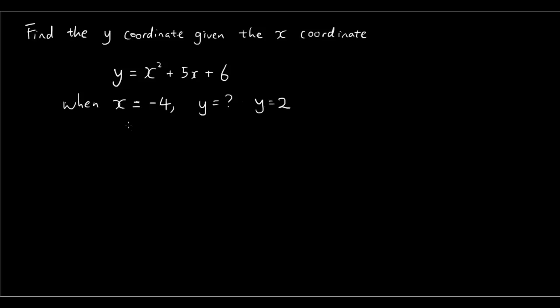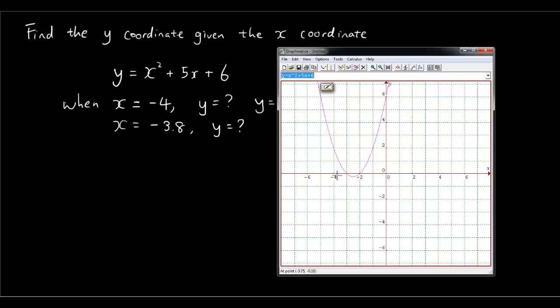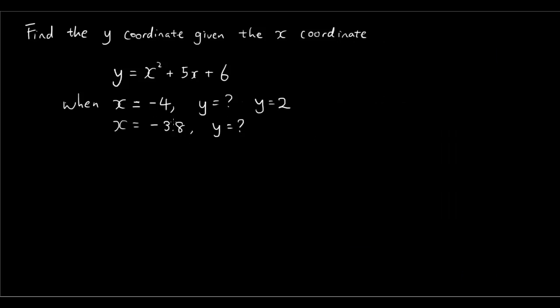However, the graph doesn't solve it to the exact value, because if I want to know when x is equal to negative 3.8, what's y? And using a graph it's kind of hard to tell where 3.8 is exactly, and then once even if you get it down to exact 3.8 it's hard to know what the y coordinate is as well. So even though you can get a rough idea of the x and the y values, it's not exactly accurate. It's not the most accurate way.